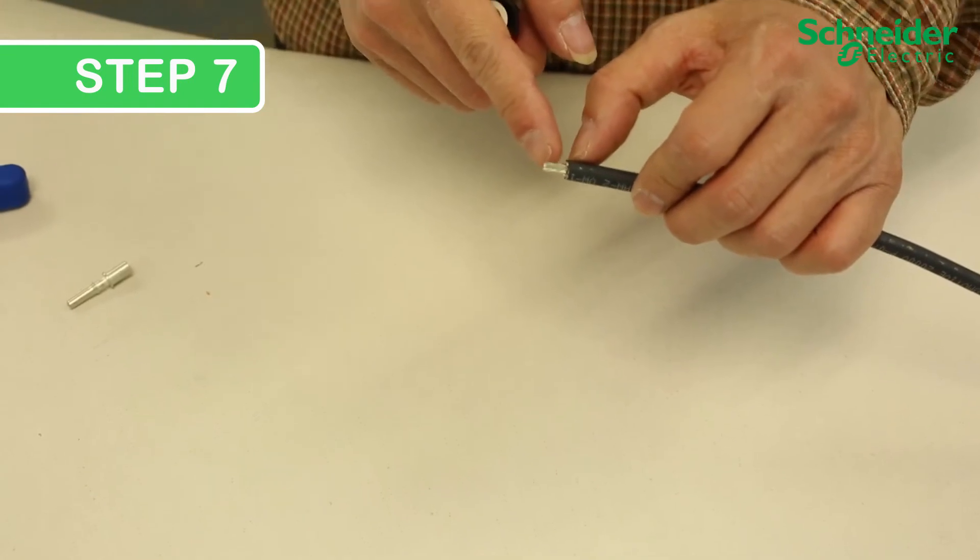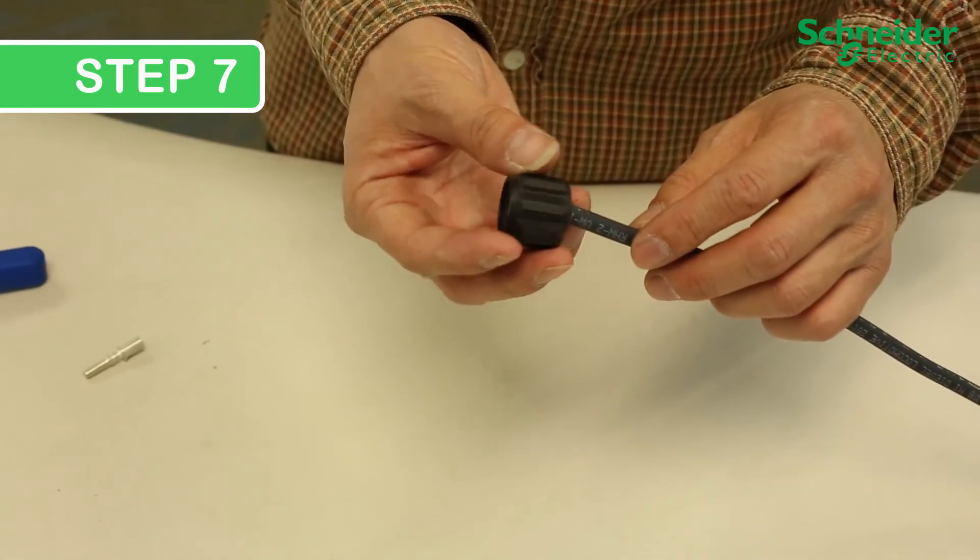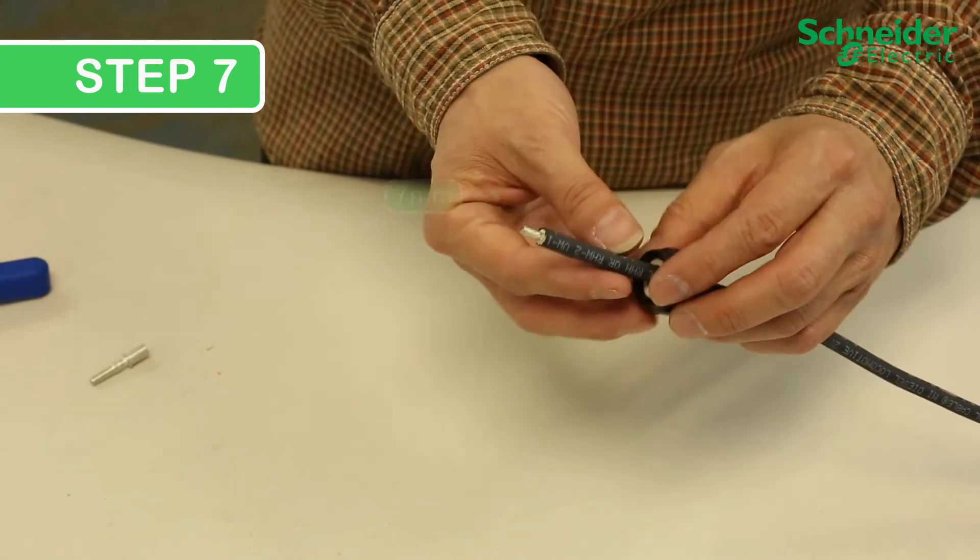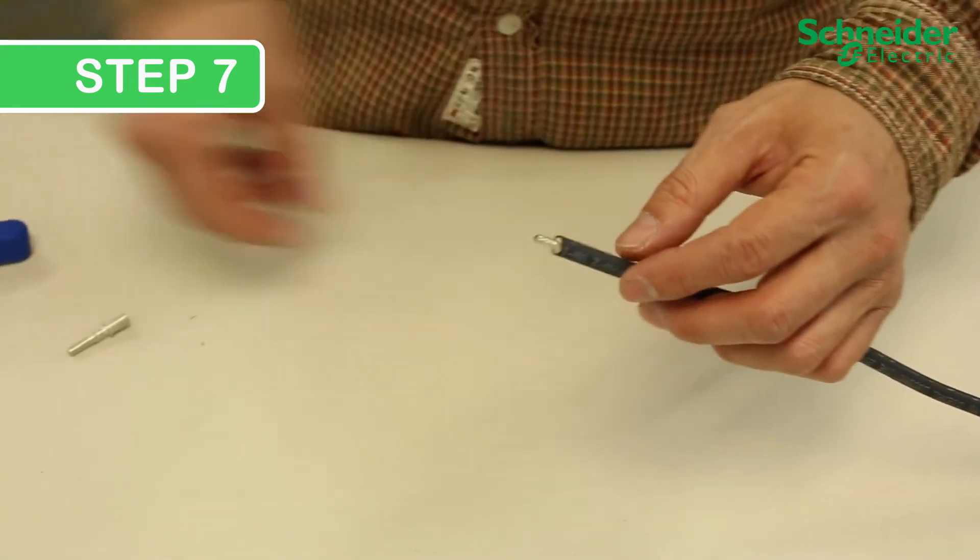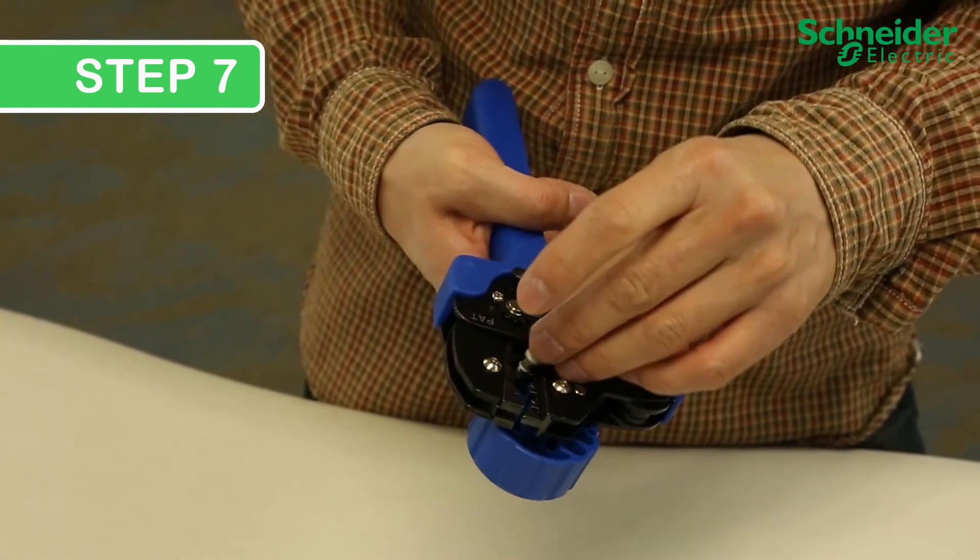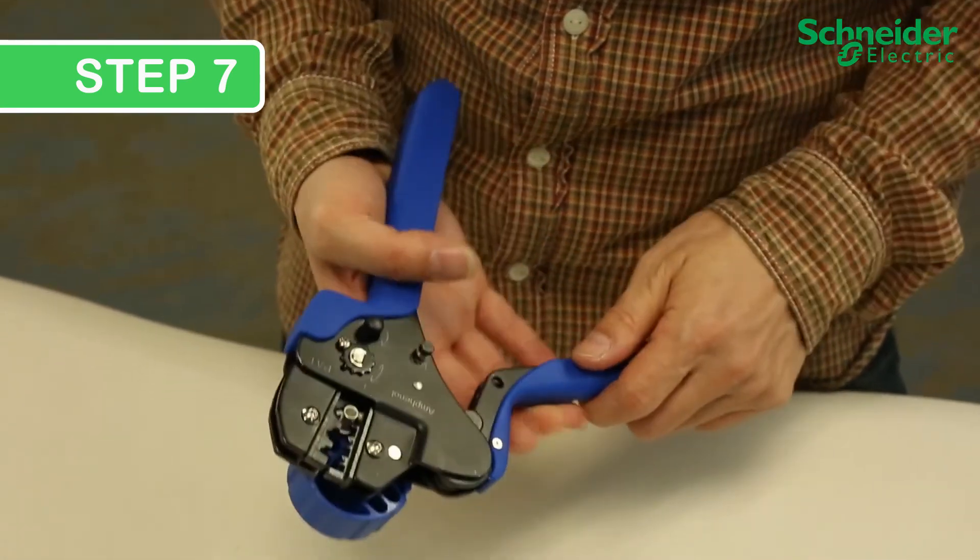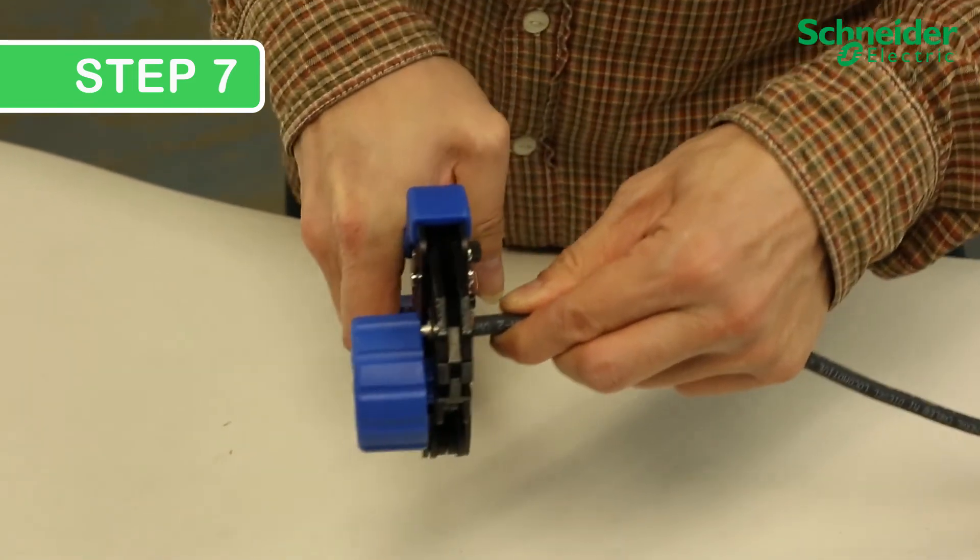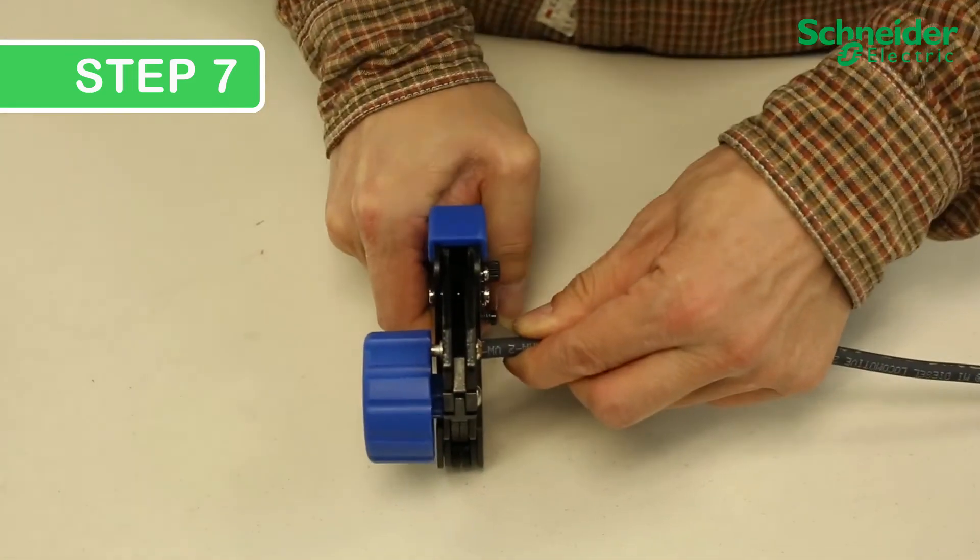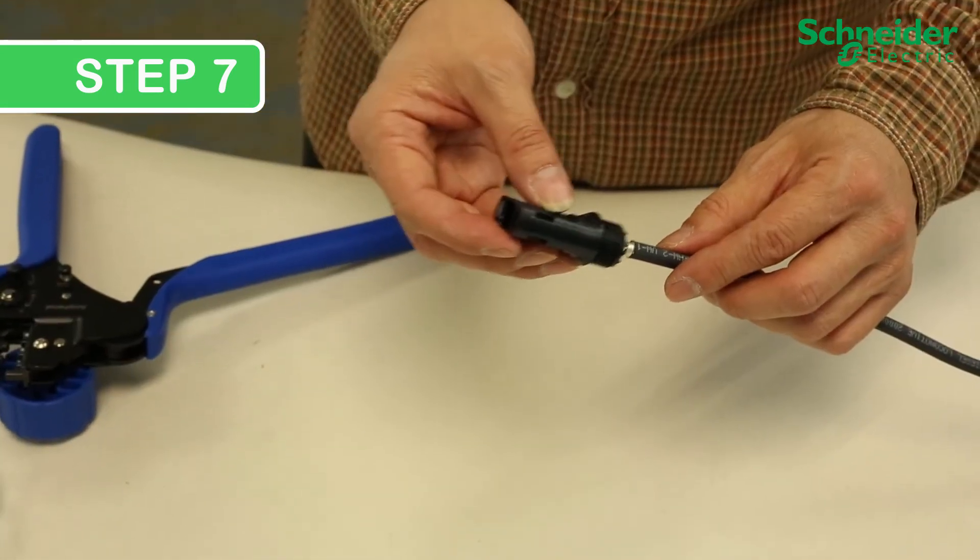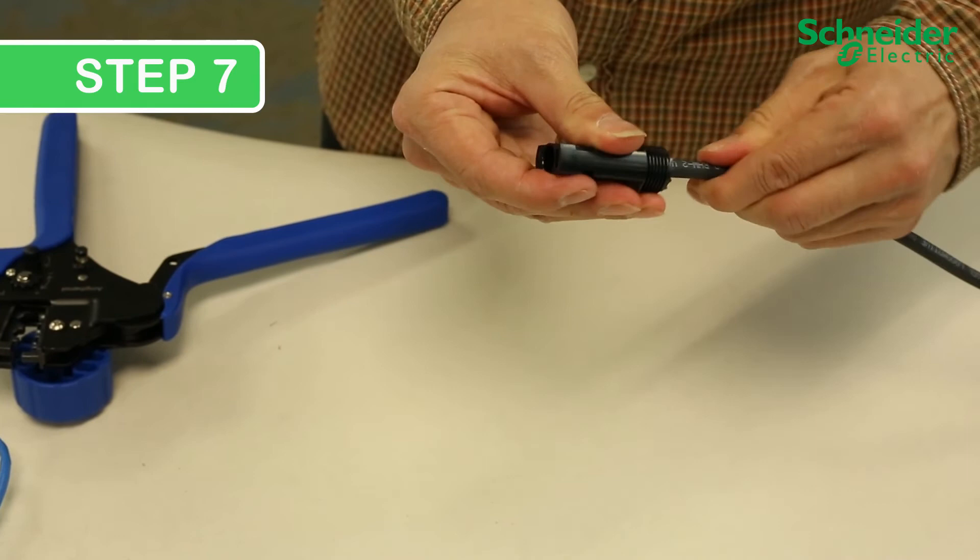Step 7: Installing PV connectors. Strip 7 millimeters of cable jacket. Feed that through tightening nut. Put the pin in the correct type of crimper, Amphenol for H4 and Multi-Contact for MC4. Once crimped, install your insulator cap and tighten the connector using the manufacturer-recommended tools for the PV connector.